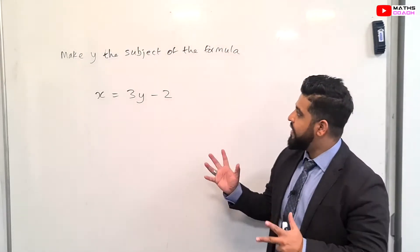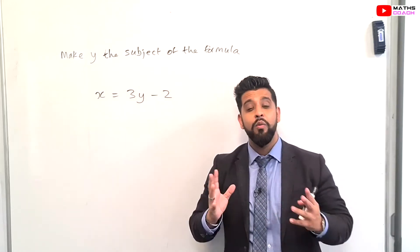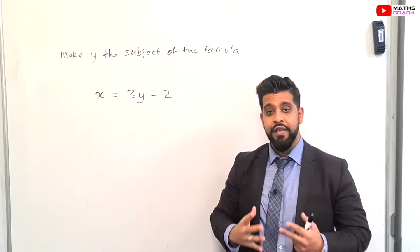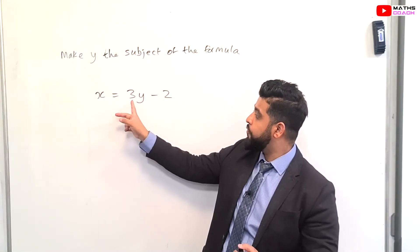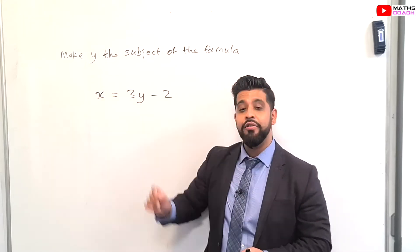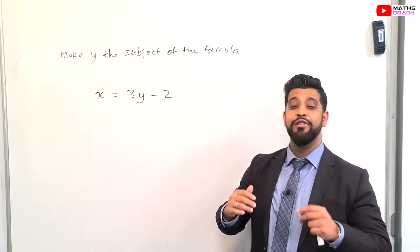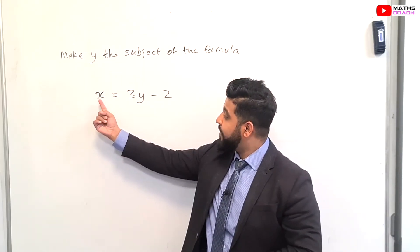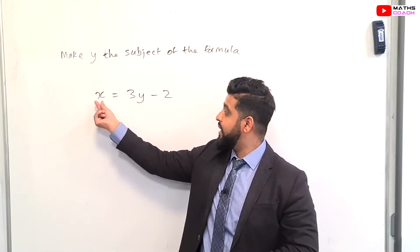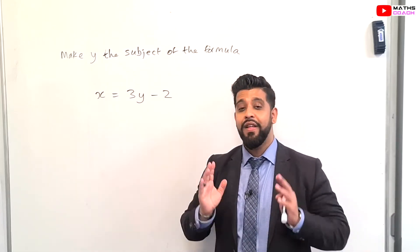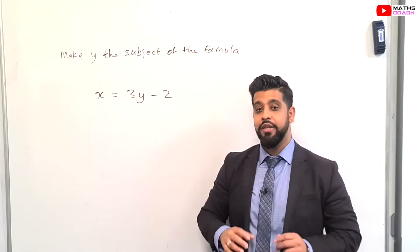Let's begin with our first question. A question in an exam may say something like: make y the subject of the formula. It wants you to rearrange the formula and make something else the subject. Here, x is equal to 3y minus 2 — x is currently the subject. A common mistake students make is thinking they can just swap where x and y are. That is wrong. You have to follow the proper steps.